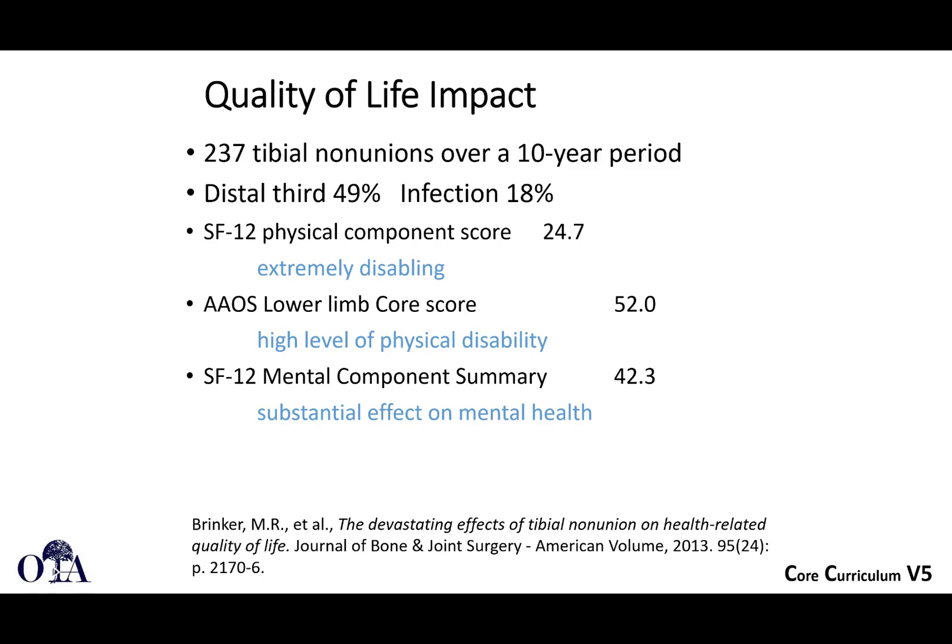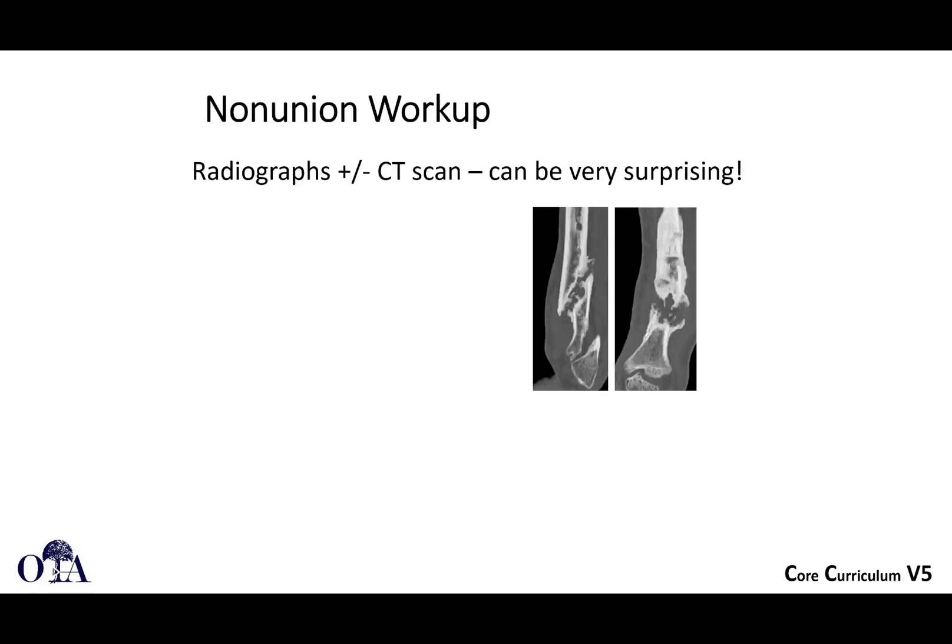There is both a monetary cost and a cost to quality of life. A study by Dr. Brinker looking at 237 tibial non-unions over a 10-year period found severe impacts on standardized patient outcome scores such as the SF-12 physical component score, AAOS lower limb core score, and SF-12 mental component score. Non-union is devastating to patients' physical and mental health and has been found to be even more severe than cardiovascular disease.